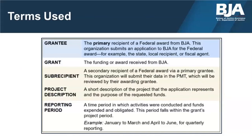A grantee is the primary recipient of a federal award from BJA — the entity that submits the application for federal funding. A grant, or award, is the funding given to grantees by BJA. A subrecipient, or subgrantee, is a secondary recipient of a federal award via a primary grantee. The project description details the purpose of the project and funding. A reporting period is the period of time in which BJA-funded activities were conducted and funds were expended and obligated, consisting of a three-month period, also called quarters.